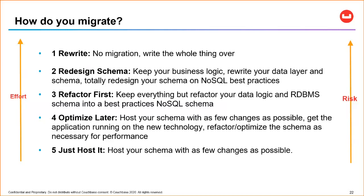Does Couchbase support traditional foreign key constraints for referential integrity? There are no foreign key constraints in Couchbase — that's part of why we're not trying to just rebuild a relational database; foreign key constraints make scaling more challenging. Couchbase supports joins between fields, but not foreign key constraints. I also can't think of any document database that does support foreign key constraints.